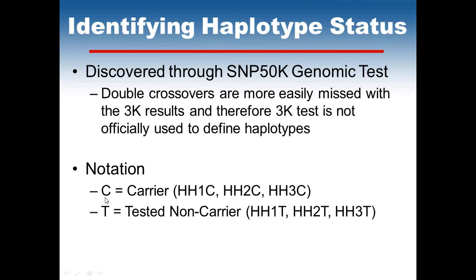In terms of our notation, C represents carrier and T for tested non-carrier. We use the notation Holstein Haplotype 1 with a C if it's a carrier, a T if it's a non-carrier. Similarly for Holstein Haplotype 2 and Holstein Haplotype 3, whether it's a carrier or tested free of the condition.